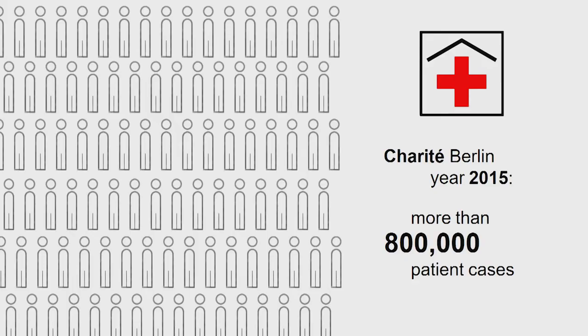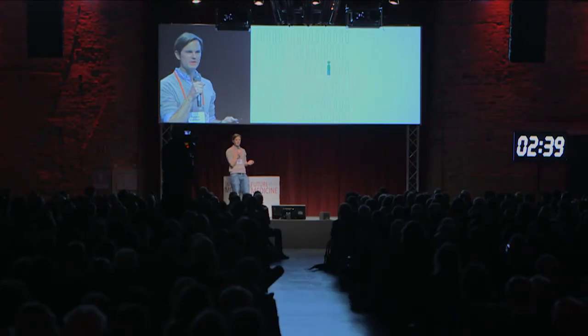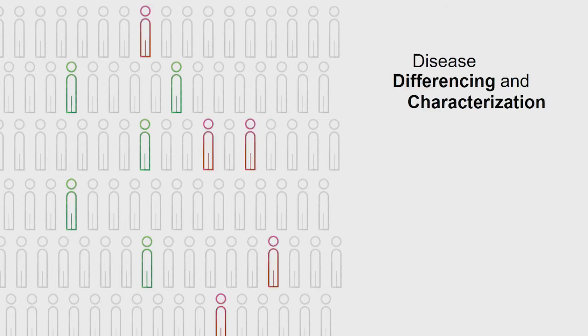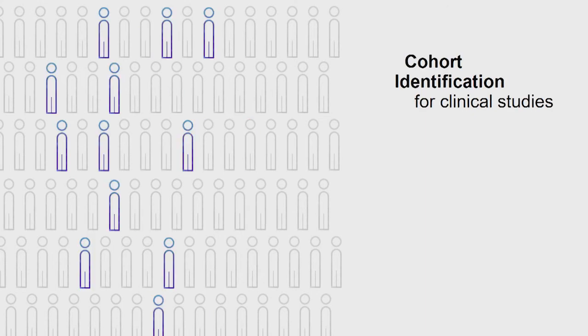In the single year 2015 at the Charité University Hospital in Berlin alone, more than half a million patients — almost a million patient cases — were seen and digitally recorded. When a new patient comes in, wouldn't it be great if we could use all that information from previous cases to provide clinical decision support based on similar patients seen before? Or if we could mine different courses of a disease and characterize what parameters make for a good or bad outcome of certain treatments? Or if we could easily identify clinical cohorts for studies?